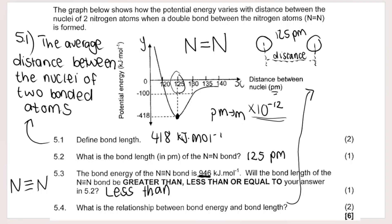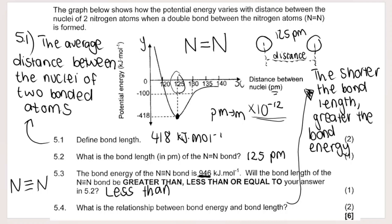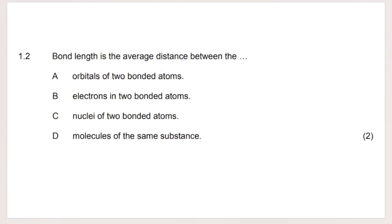The bond length of the nitrogen–nitrogen triple bond will be less than 125 pm. As for the relationship: the shorter the bond length, the greater the bond energy. Conversely, a longer bond length means smaller bond energy. Think of it this way — atoms pulled close together have a very strong bond; you need more energy to break it.